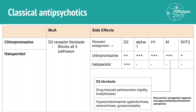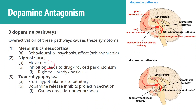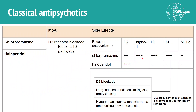Chlorpromazine and haloperidol both work on D2, but chlorpromazine also works on a bunch of other receptors: alpha-1, histamine, muscarinic receptors, and serotonin or 5-HT2 receptors. We know that inhibiting the nigrostriatal pathway leads to drug-induced Parkinsonism. However, by inhibiting muscarinic receptors through muscarinic antagonism, we actually oppose the Parkinsonism symptoms and oppose extrapyramidal symptoms — involuntary movements such as facial twitching, grimacing, and lip-smacking.